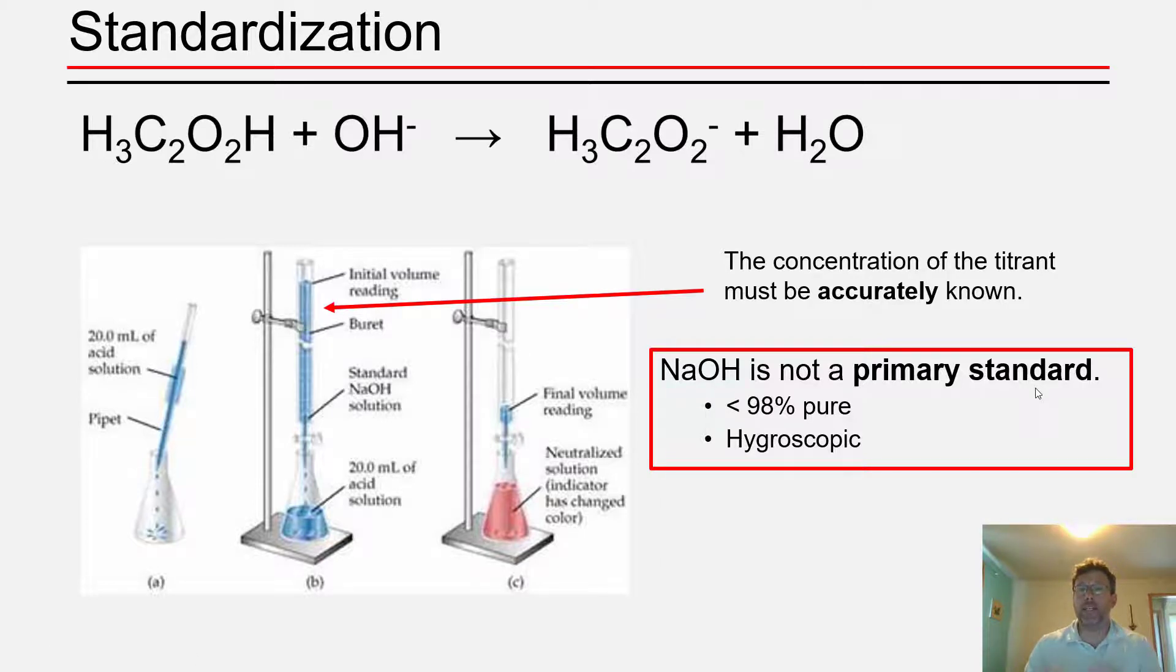A primary standard is a chemical that you can prepare a titrant solution with a precisely known concentration from the solid directly. But most chemical compounds, sodium hydroxide included, are not primary standards. For one thing, when you purchase them from a chemical company, the purest sodium hydroxide solids are only about 98% pure, which leads to an error in the concentration of the solution if you don't know the exact purity of the compound or the compound's not 100% pure.